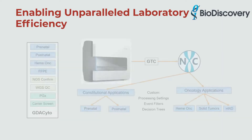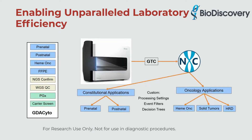NX Clinical detects CNVs and AOH genome-wide by taking the GTC file straight from the Illumina iScan. HRD analysis is one analysis modality that is achieved with NX Clinical and the GDA CYTO array.